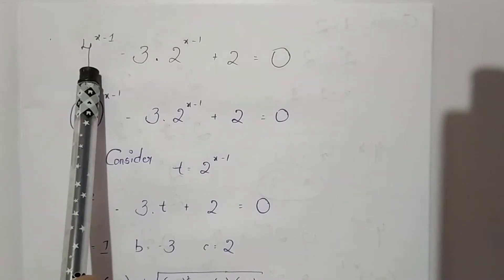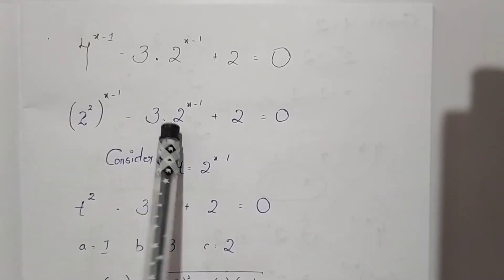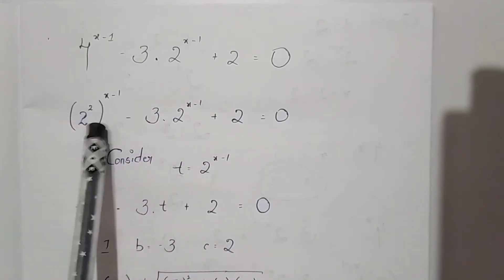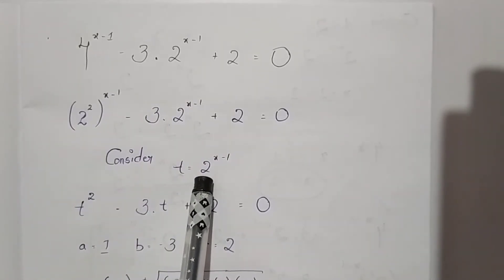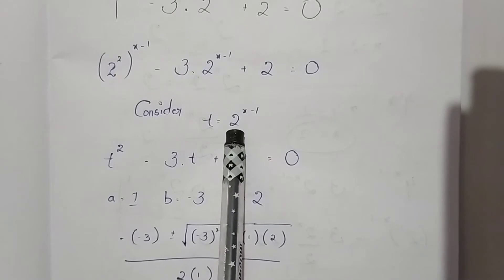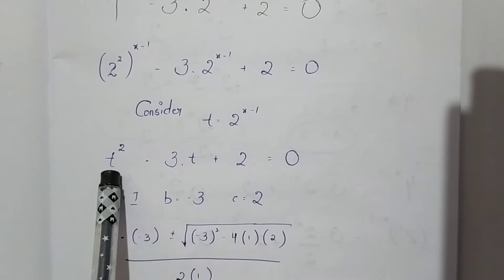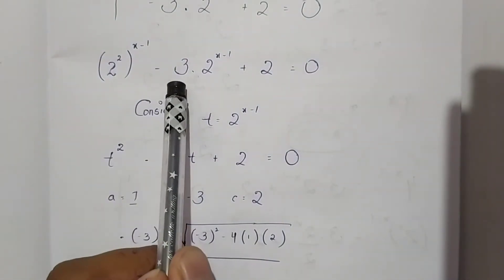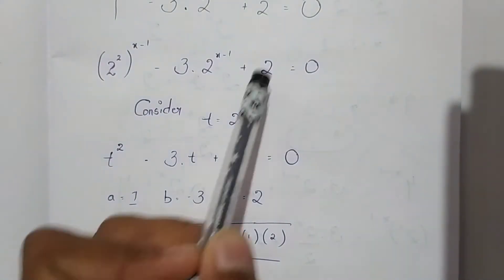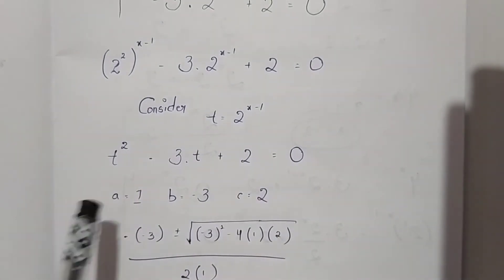From this we can write 4 as 2 squared, so 2 squared to the power of x minus 1, minus 3 into 2 to the power of x minus 1, plus 2 is equals to 0. From this equation we consider that t is equals to 2 to the power of x minus 1. Substituting, we get t squared minus 3t plus 2 is equals to 0 — a quadratic equation.